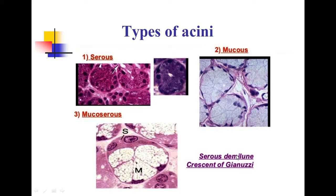There are two types of acini: serous acini and mucous acini. In some salivary glands, you can see a mixture of both, and that gland is called a seromucous or mixed salivary gland. Depending on the type of acini, you can classify it as a serous salivary gland, mucous salivary gland, or mixed salivary gland.